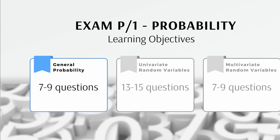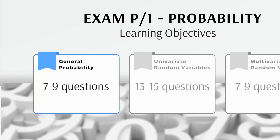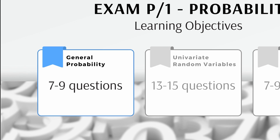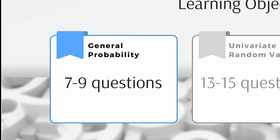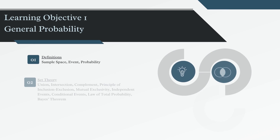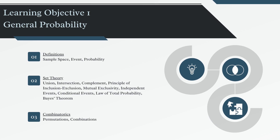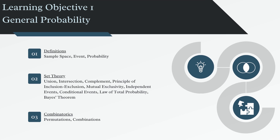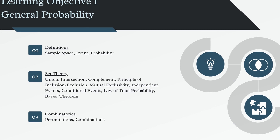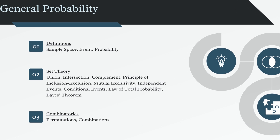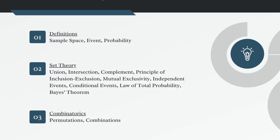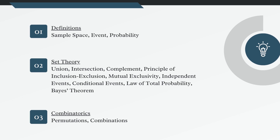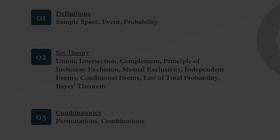On a 30-question exam, from 7 to 9 questions will be on the first learning objective, general probability. Learning objective 1 is mainly focused on set theory with some combinatorics. Starting off, some of this might just seem like common sense, but we're trying to build up to more advanced concepts.